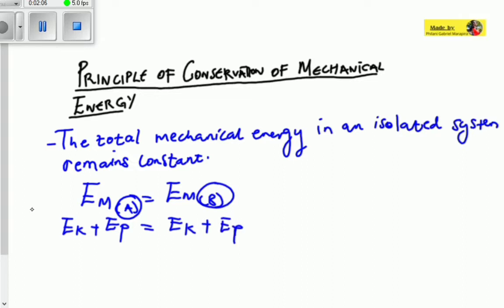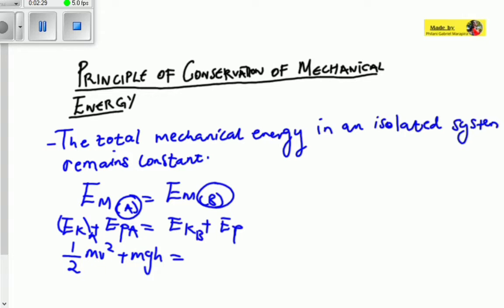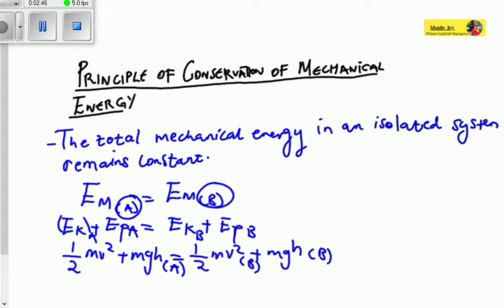Sometimes they might give you the mass of an object or the velocity of an object. We can expand this formula to: half mv² + mgh at A, equals half mv² + mgh at B. So the left side is all at A and the right side is all at B.